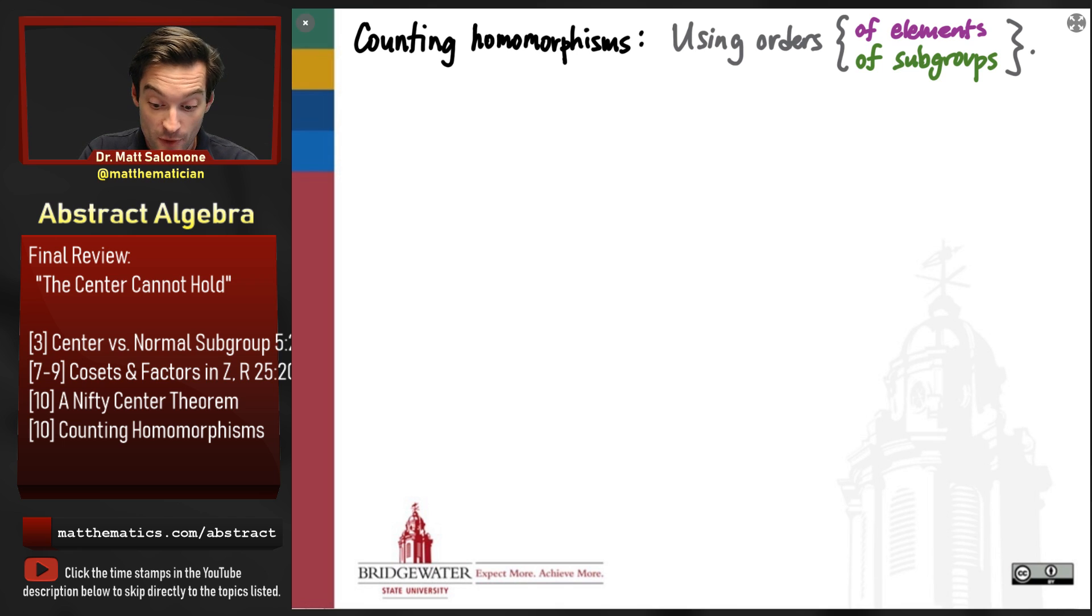what do we know about homomorphisms as it relates to the orders of elements and the orders of subgroups? If we can use the properties of homomorphisms that we get from those two things, we should be able to say a great deal about how one group compares to another group using homomorphism.